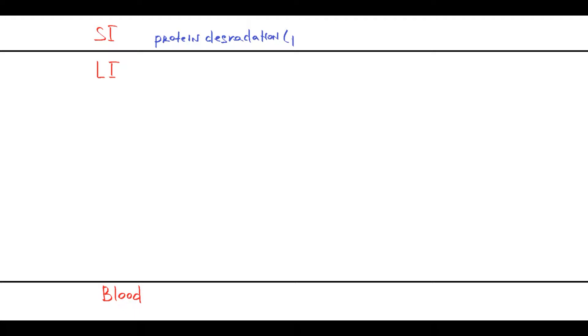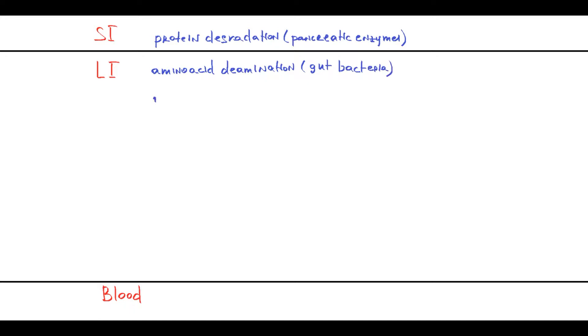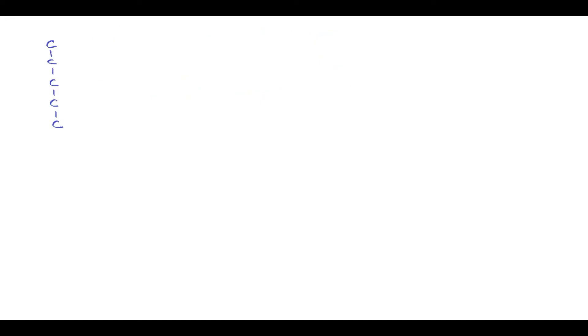About the ammonia pathway from intestinal lumen to the blood: there are three compartments — small intestine, large intestine, and blood — and several processes in the gut that result in ammonia production. In the small intestine there is protein digestion by pancreatic enzymes. In the large intestine it's amino acid deamination by gut bacteria and urea degradation by urease-producing bacteria. All of these processes result in ammonia production.